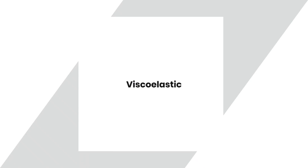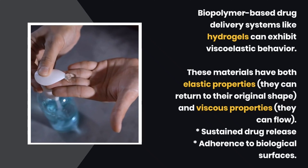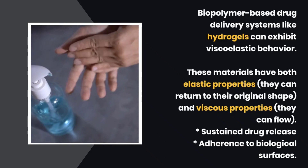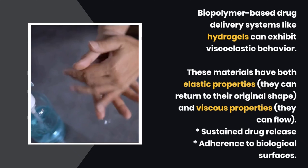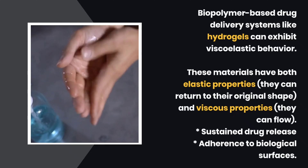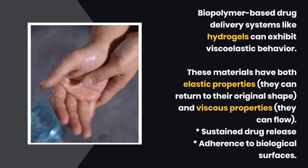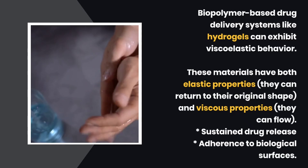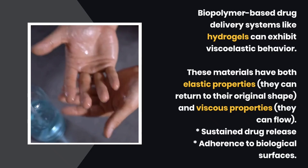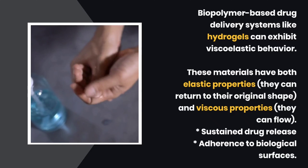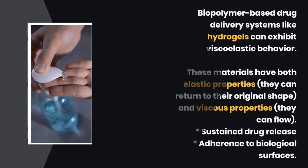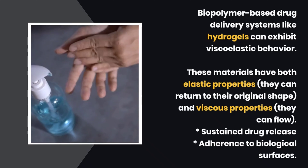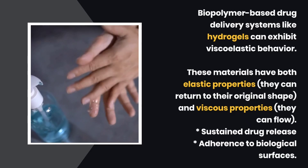A viscoelastic example: biopolymer-based drug delivery systems, like hydrogels, can exhibit viscoelastic behavior. These materials have both elastic properties — they can return to their original shape — and viscous properties — they can flow. This is advantageous for sustained drug release and adherence to biological surfaces.